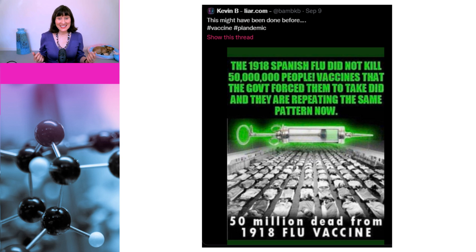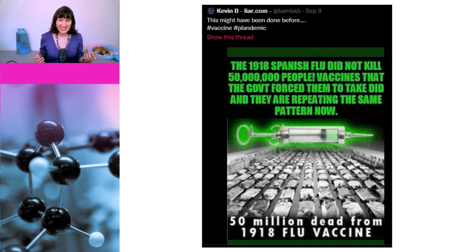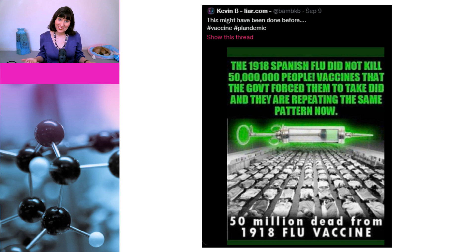This is a tweet from someone known as KevinBLier.com, and that certainly is a very apt name for him. According to Kevin, the 1918 Spanish flu did not kill 50 million people — vaccines that the government forced them to take did, and they are repeating the same pattern now. Now, as I'm sure most of you know, there was no flu vaccine in 1918. The influenza virus wasn't even isolated until 1933 and the first flu vaccine wasn't invented until 1938. So Kevin B is living up to his liar.com name and lying.